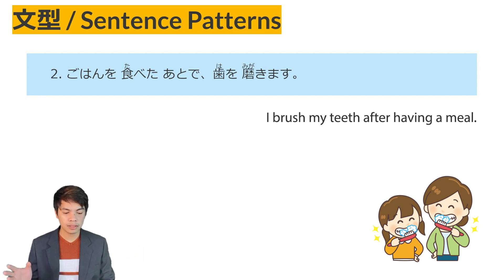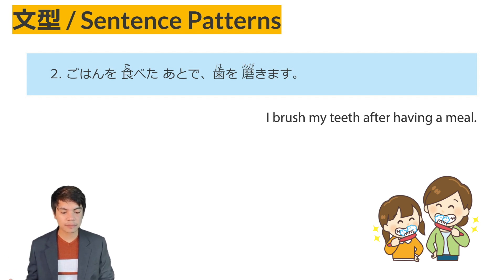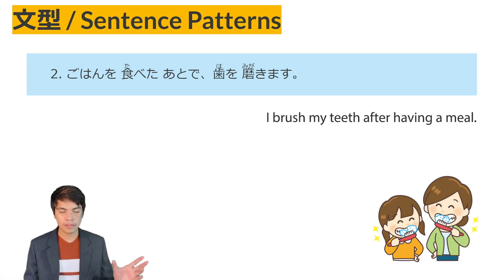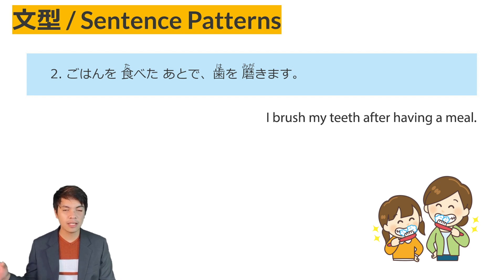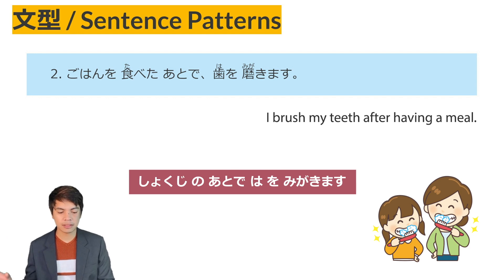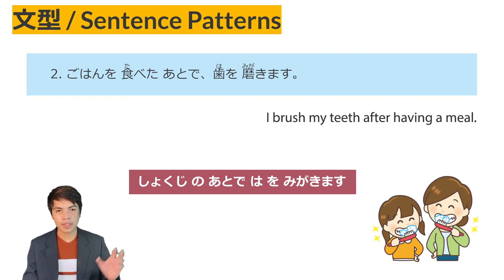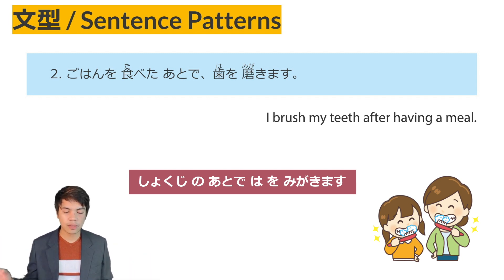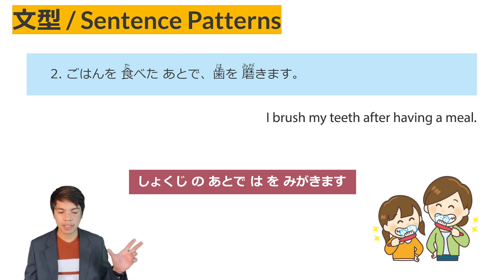For example, gohan o tabeta ato de — after eating, after having a meal — ha o migakimasu, I brush my teeth. For the noun pattern, you can say shokuji no ato de — after the meal, shokuji is a noun plus no ato de — ha o migakimasu. After the meal, I will brush my teeth.